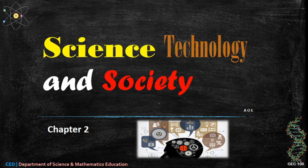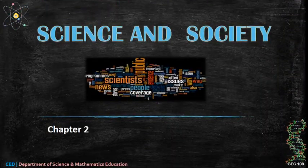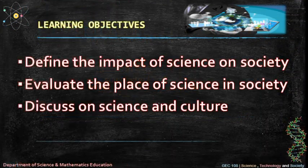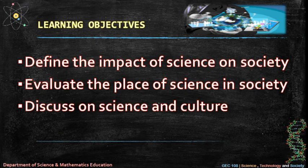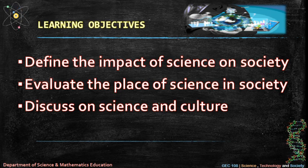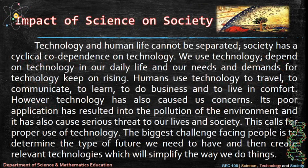Science, Technology and Society — Chapter 2: Science and Society. Learning objectives: define the impact of science on society, evaluate the place of science in society, discuss science and culture, and the impact of science on society.